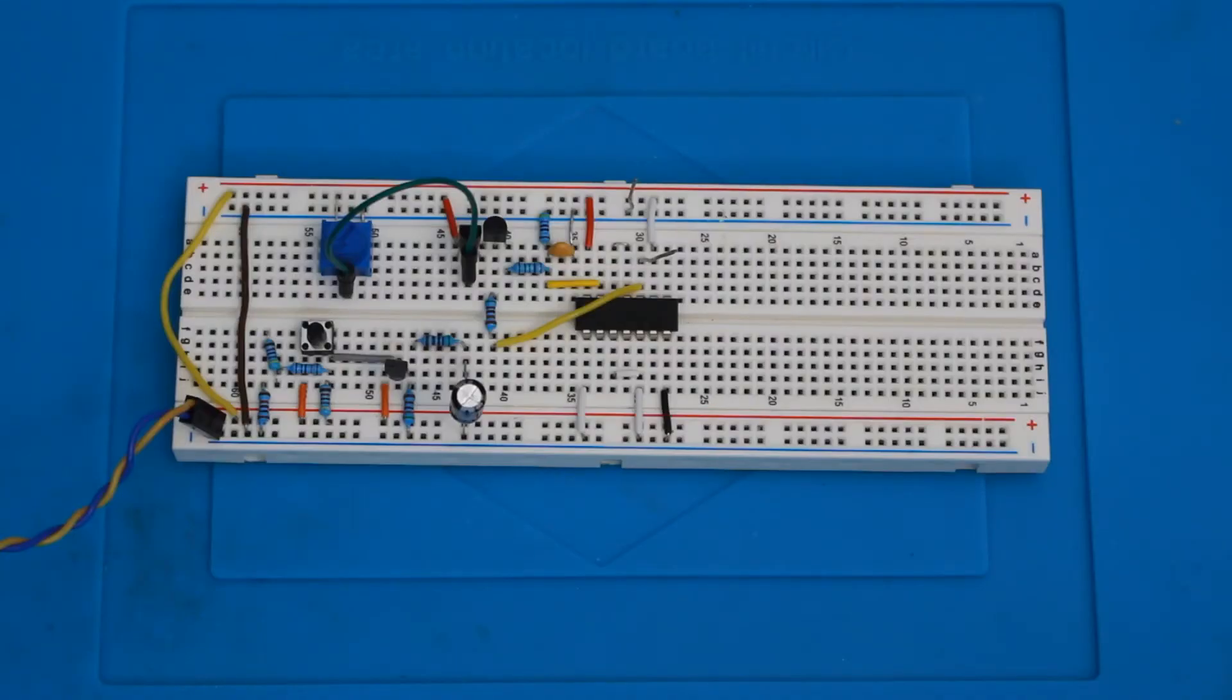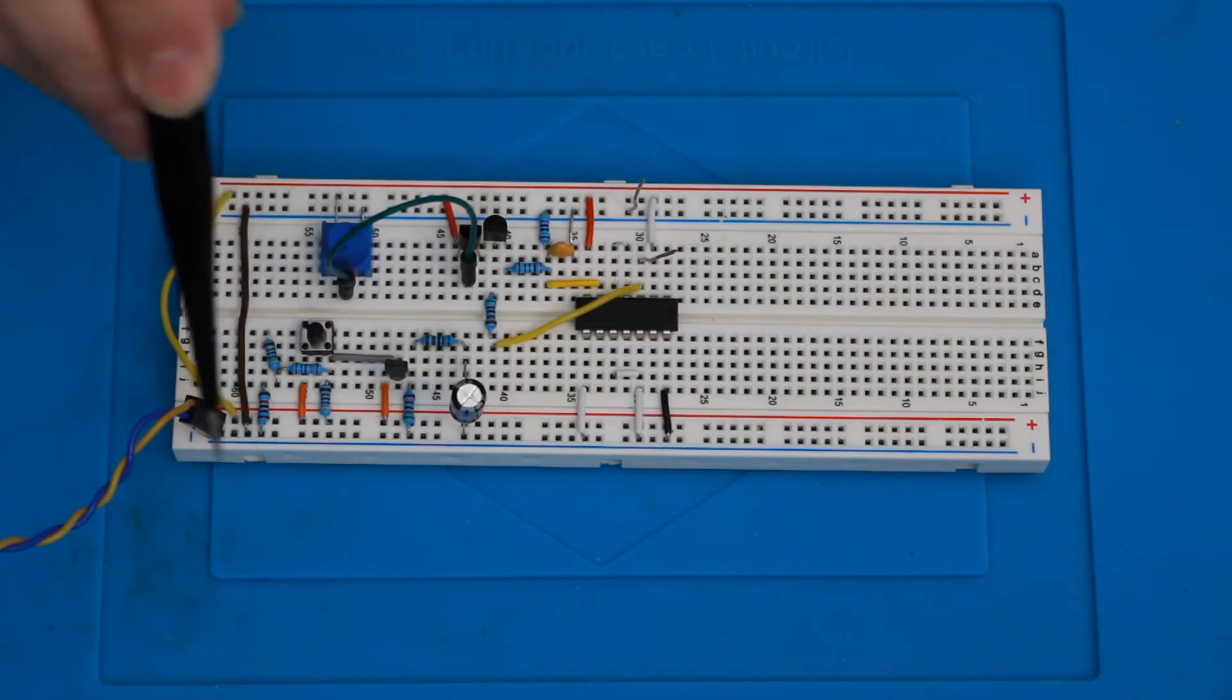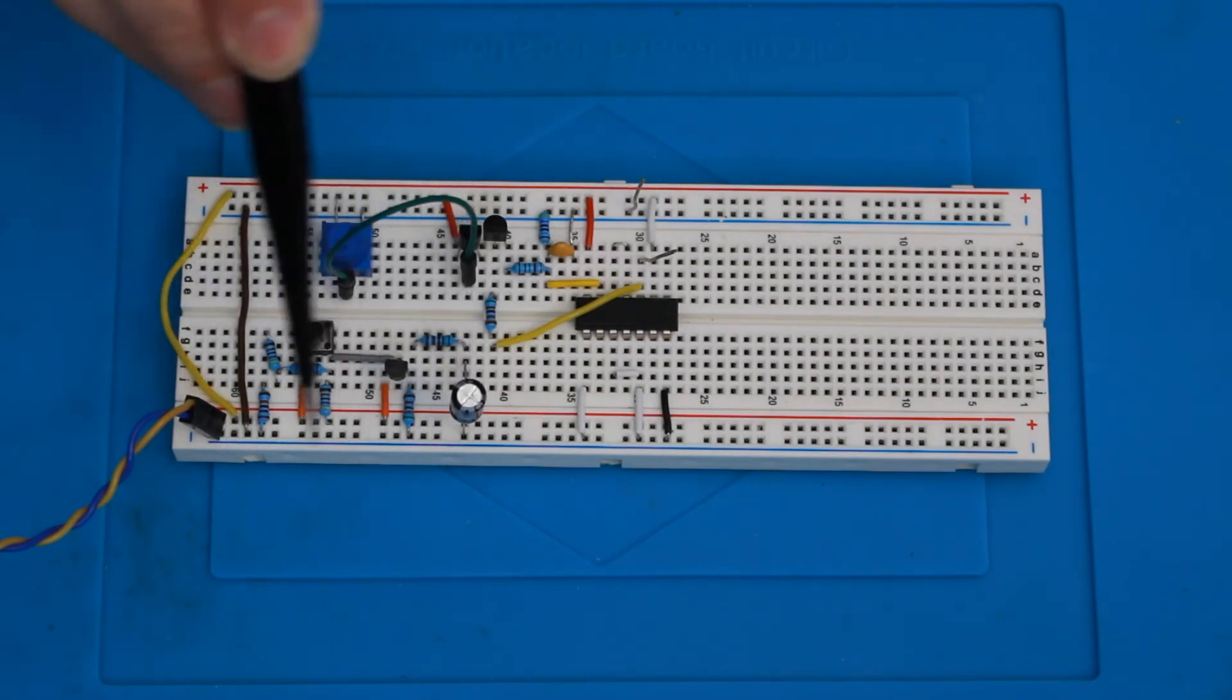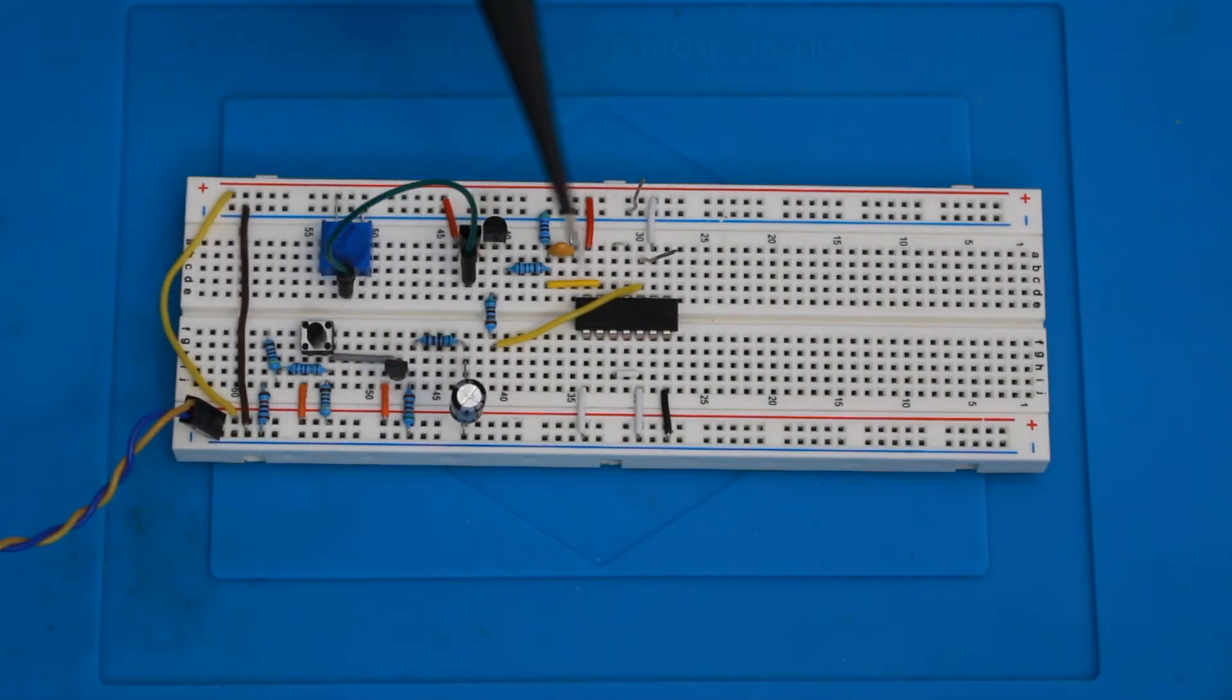Here's the circuit on a breadboard. Ignore the bit in the bottom left for now, it's not connected, and I'll explain that later. Over here on the right, we have the hex inverter-based oscillator circuit I made before. Here's the first inverter, and here's the second one.